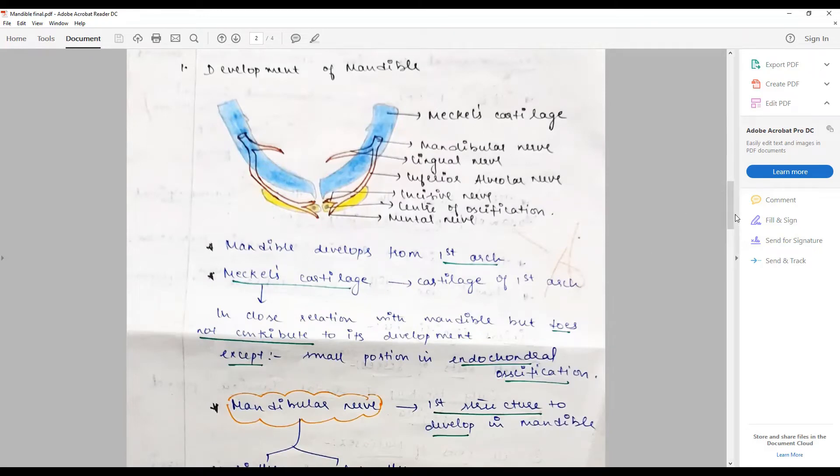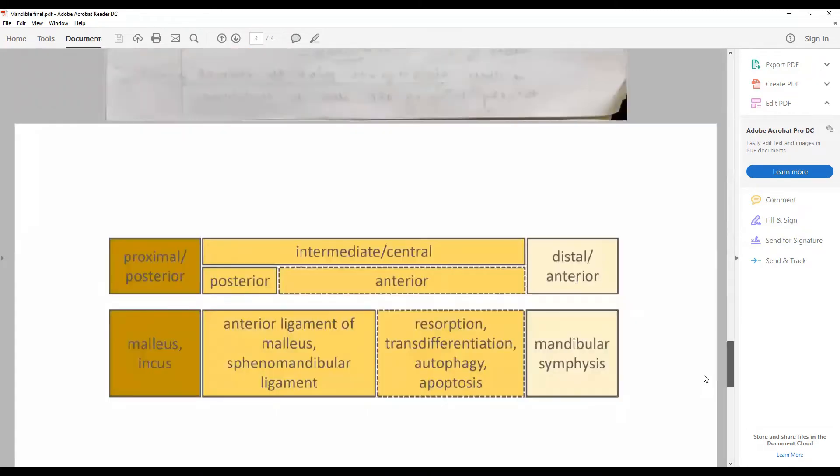We'll come back to the role of Meckel's cartilage in the form of a diagram. The proximal aspect contributes and persists in the adult as the malleus and incus. The intermediate or central part, the posterior part, contributes to the anterior ligament of malleus and the sphenomandibular ligament. The anterior is totally resolved or undergoes apoptosis.